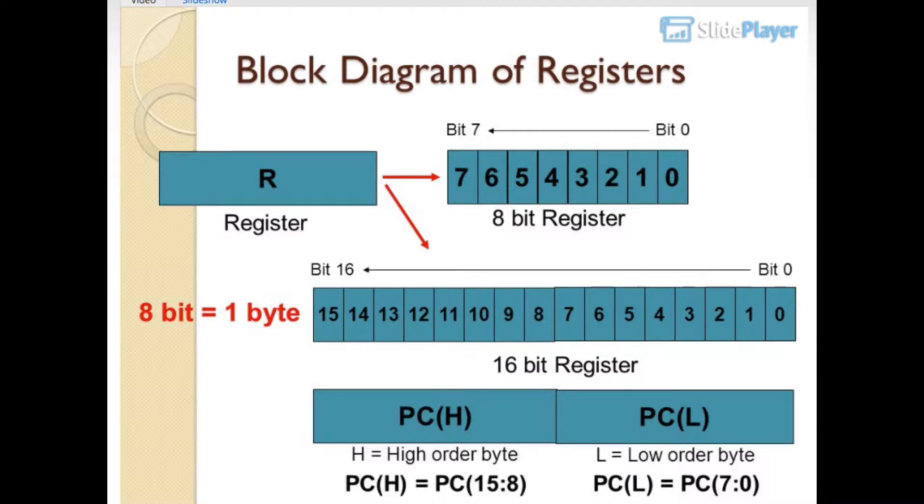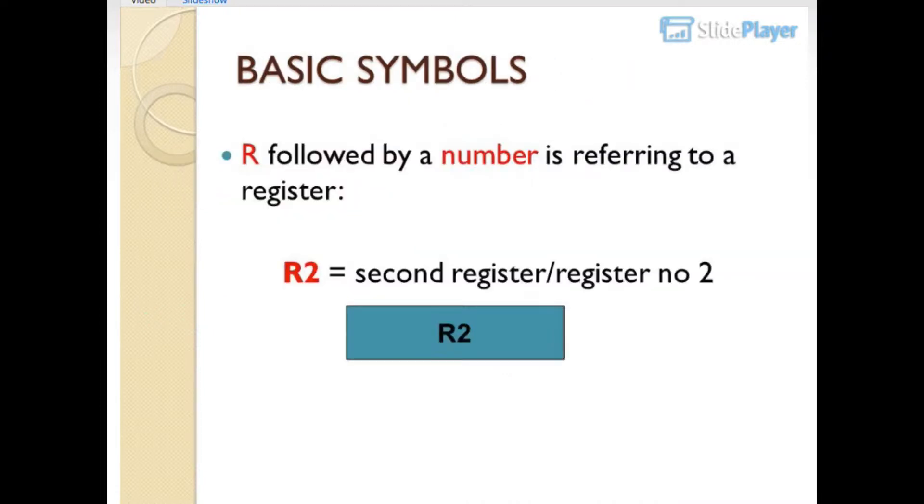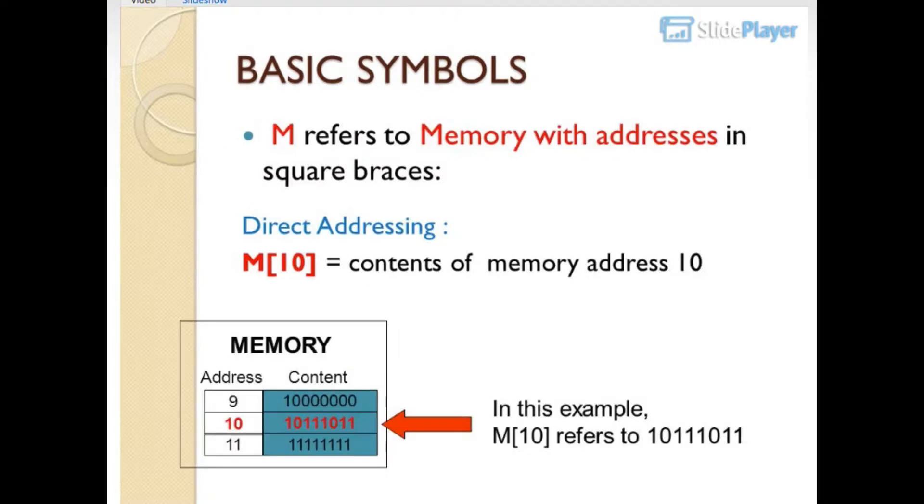Basic symbols: R followed by a number is referring to a register. For example, R2 equals 2nd register or register number 2.